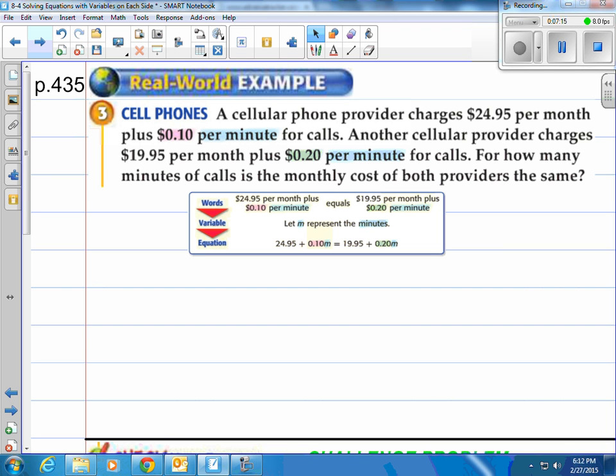So step one is finding out each provider's detail. So we have $24.95 per month, plus $10 per minute. And when is that going to be equal to $19.95 per month, plus $20 per minute? We're going to let M represent the minutes, and they put those words into an equation, or into expressions, and then set them equal to make them an equation. So that's why you have the $24.95 plus $0.10 times minutes, how many minutes you have, and then $19.95 plus $0.20 times minutes.